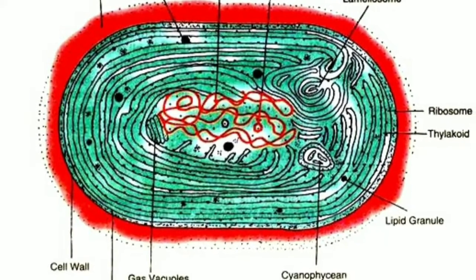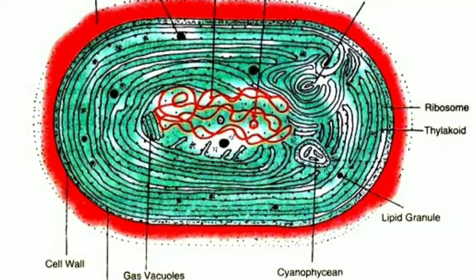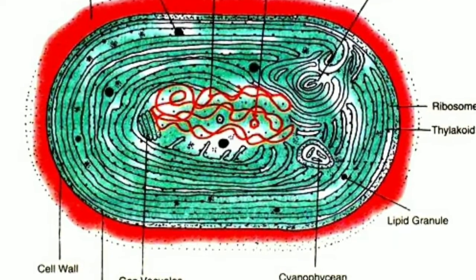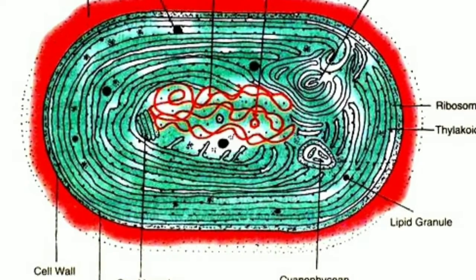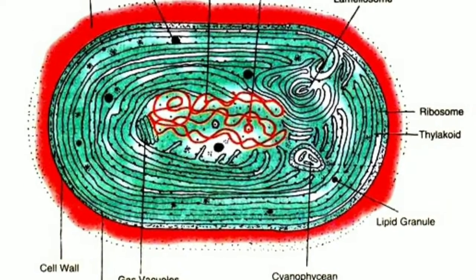Polyhedral bodies are angular in shape and associated with DNA in center of cell. They are considered as carboxysomes which store carbon dioxide fixing enzyme, ribulose 1,5-bisphosphate carboxylase.